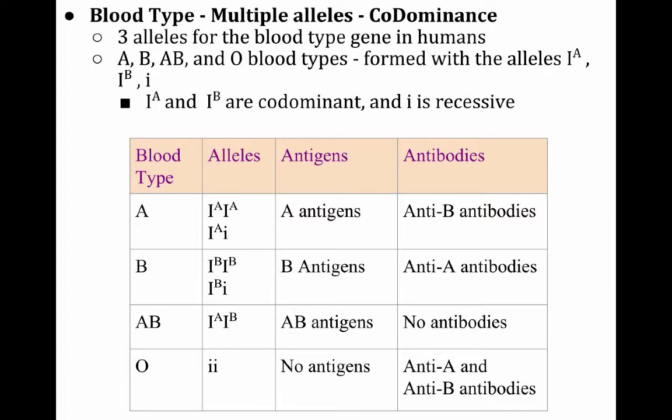So you can be blood type A, blood type B, blood type AB, or blood type O. And then the three possible alleles you could have for blood type are I^A, I^B, and i. I^A and I^B are codominant, and little i is recessive.